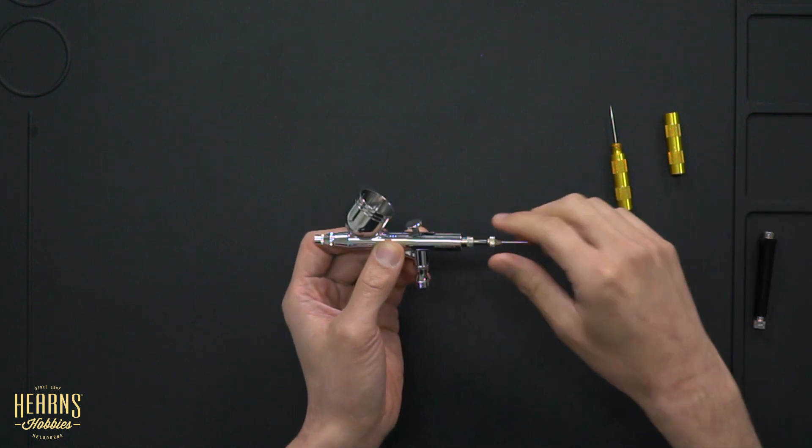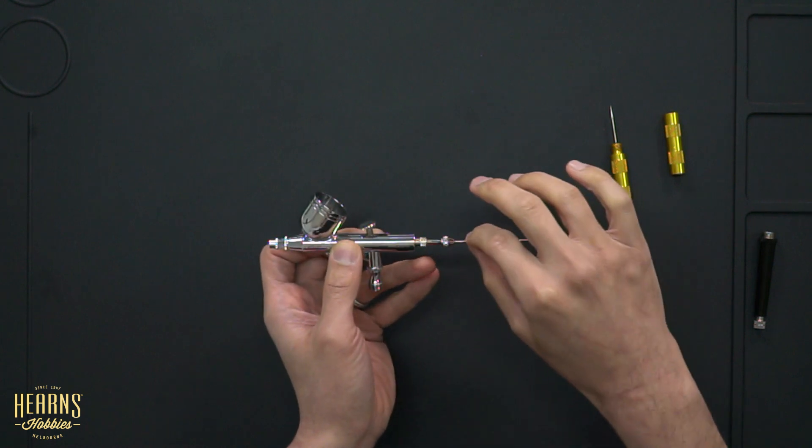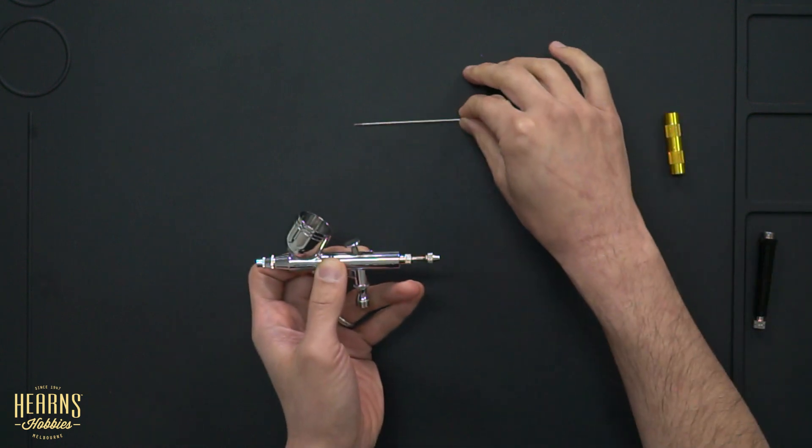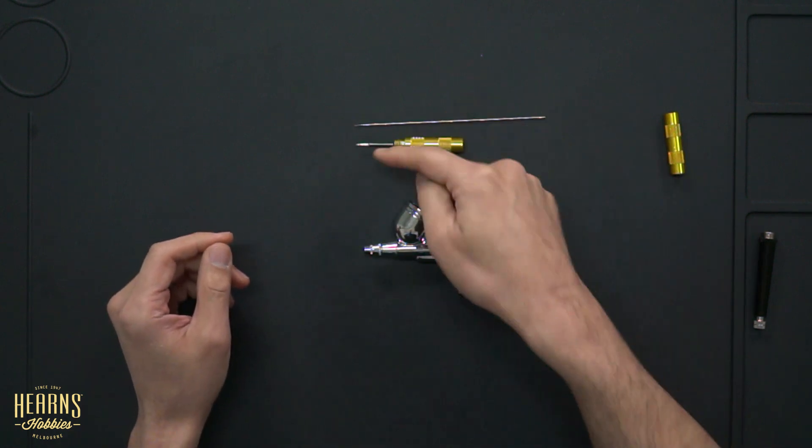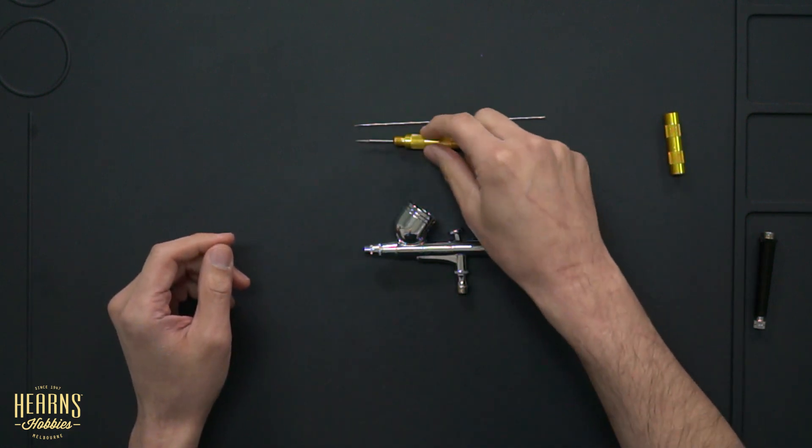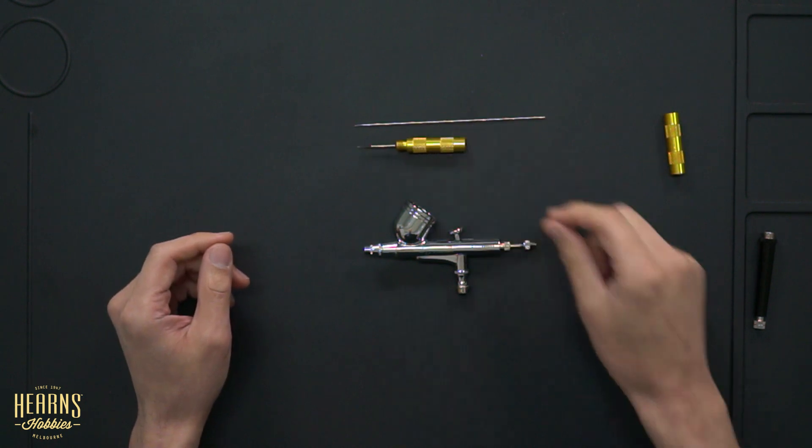Taking the end cap off, loosen off the knurled capture nut, carefully pull out the needle. So there's a needle right there. And as you can see, they're tapered. Very similar shape there.